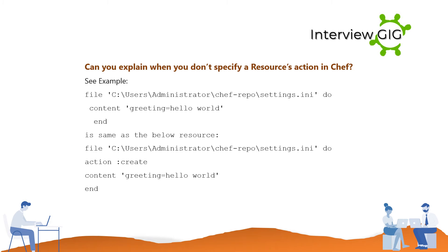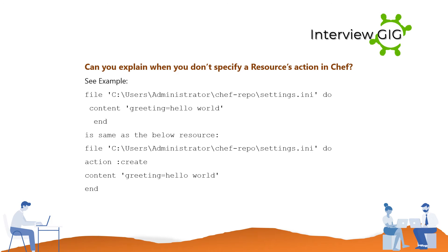Can you explain what happens when you don't specify a resource action in Chef? For example: file 'C:\users\administrator\chef-repo\settings.any' do content 'greeting=hello world' end is the same as: file 'C:\users\administrator\chef-repo\settings.any' do action :create content 'greeting=hello world' end. The default action is applied when no action is specified.